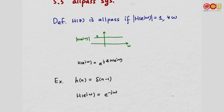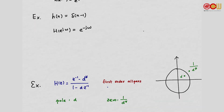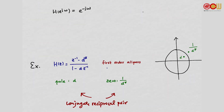Let's look at a more non-trivial example. Such an H is called a first-order all-pass. It has a pole at d and a zero at 1 over d conjugate. So the pole at d and the zero at 1/d* form a conjugate reciprocal pair.